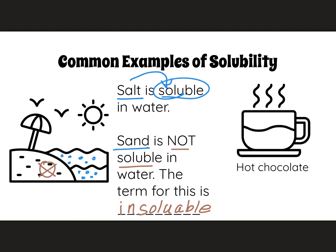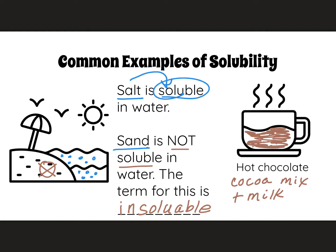Now, it's getting colder out and we're probably drinking more hot chocolate. So hot chocolate is another example of solubility. First, we heat up the milk and then we put the solid — which is the cocoa mix — into the milk and we stir it up. The solid mixes in between the molecules in the milk and then we are left with a delicious warm cup of hot chocolate. So cocoa mix is soluble in milk.